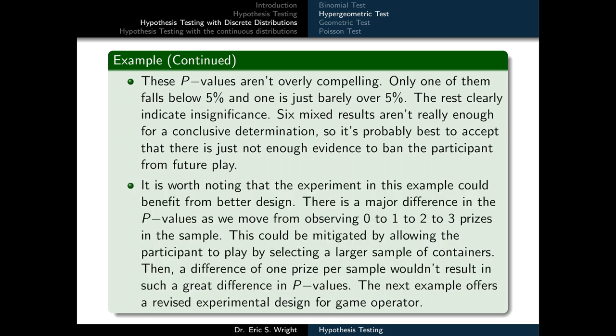It is worth noting that the experiment in this example could benefit from better design. There is a major difference in p-values as we move from observing 0 to 1 to 2 to 3 prizes in the sample. This could be mitigated by allowing the participant to select a larger sample of containers — then a difference of one prize per sample wouldn't result in such a great difference in p-values. The next example offers a revised experimental design for the game operator.